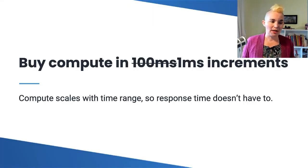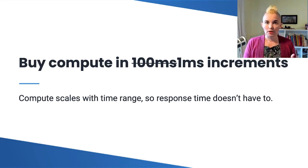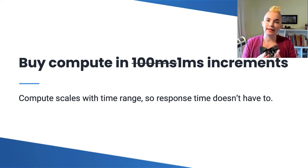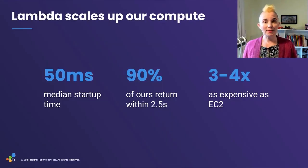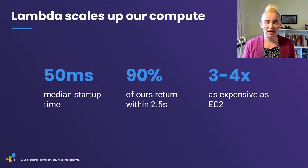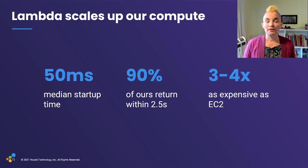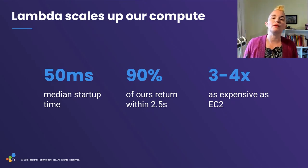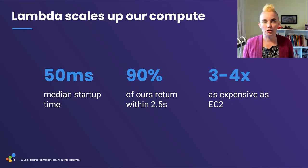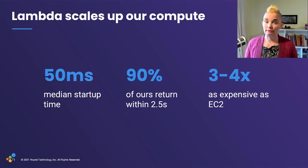Buying compute in one-millisecond increments — you can do it. Our median Lambda start time is about 50 milliseconds. We don't see much difference between hot and cold startups. They tend to return within two and a half seconds, which is acceptable. They are three to four times more expensive per CPU second than EC2, but we run them at least 100 times less than we would an EC2 instance for the same compute — so this works out. There are caveats to all of these that we overcame.